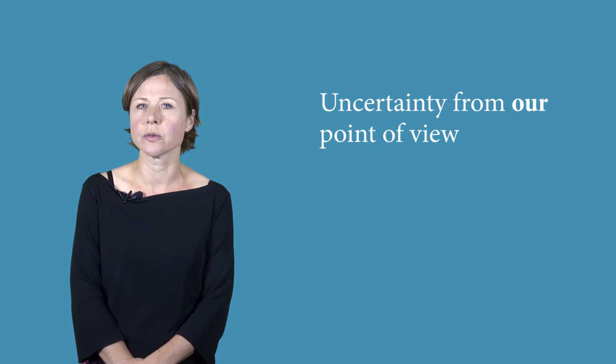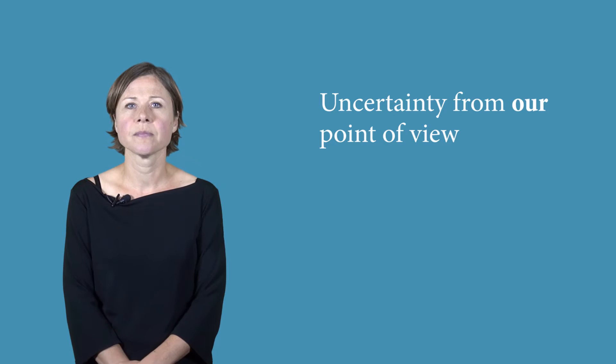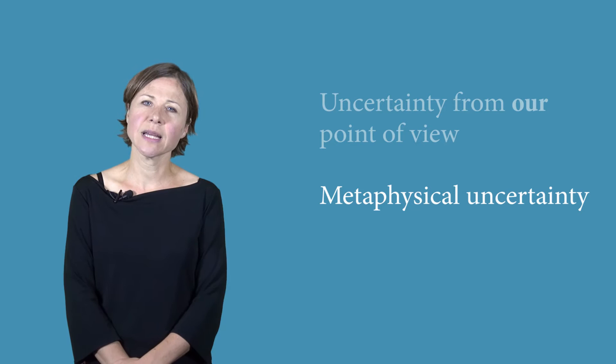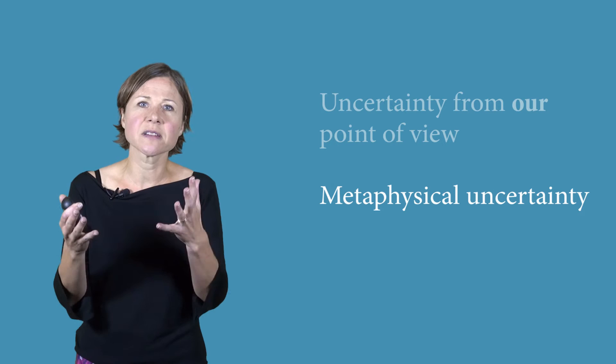So here's a useful distinction. We can think of uncertainty about the way things are as being uncertainty from our point of view. There's all kinds of things that I don't know. But that doesn't mean that there isn't a way that they are and a way that they're going to be. There's also what we might call metaphysical uncertainty. So metaphysical uncertainty is uncertainty that's in some way in the fabric of the universe. A genuine chanciness or randomness that's in the world, not just in my lack of knowledge of the world.